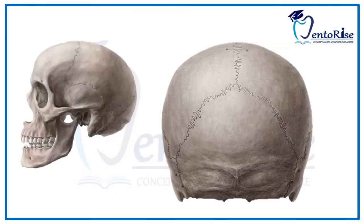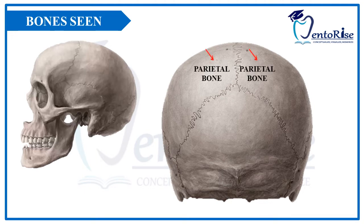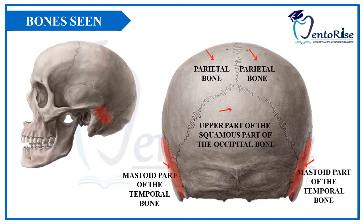The second heading under Norma Occipitalis is the bones seen from this aspect. Starting from above, posterior parts of the parietal bone can be appreciated. Moving a little downwards, we can see the upper part of the squamous part of occipital bone. On the sides we can see the mastoid part of temporal bone. It is marked in the figure on the left with the help of white and red circles, both representing the temporal bone.